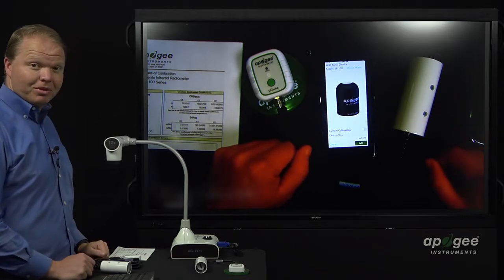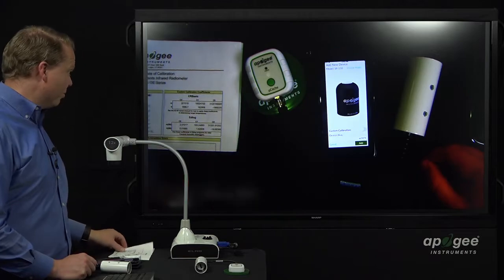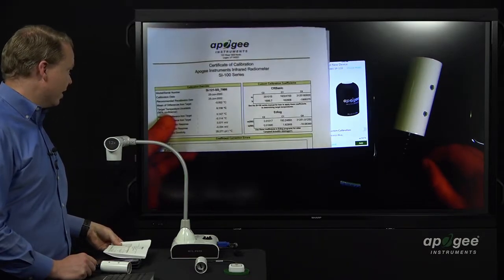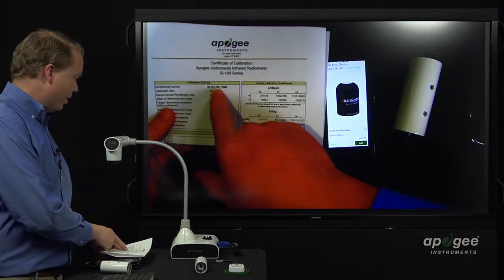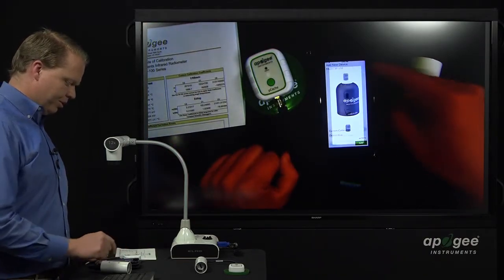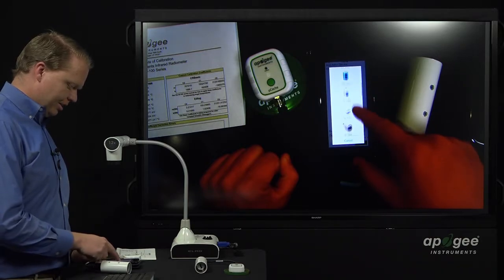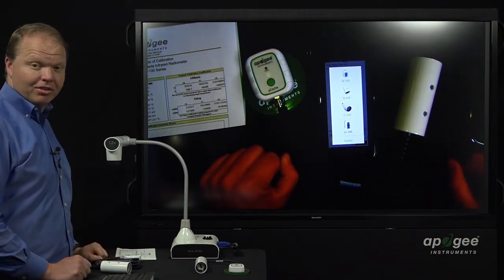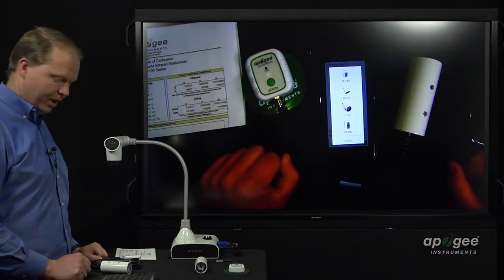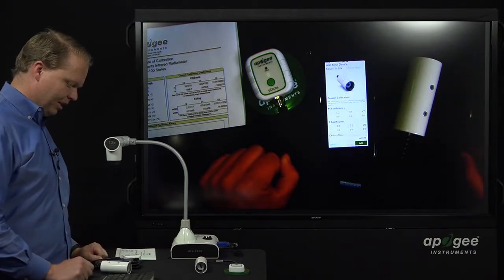We see it comes up as an SP 110, which is incorrect. We know this is a SI 121 and we can look at our cal sheet that came with the unit to know which model we're connecting, which one we had bought. So, we choose model, but we actually, it just is any, whether it's an SI 111, 121, 131, or 1H1, we just do the SI-1XX. So we click there.